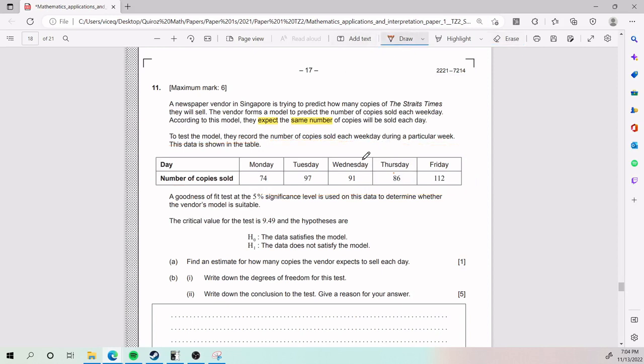They tell us that a goodness of fit test at the 5% significance level is used on this data to determine whether the vendor's model is suitable, that the critical value is given, and that H0 and H1 are given. So a couple of important things before we jump into the problem. First, they give us significance level and critical value, which we need to conclude for our tests. Second, H0 and H1 are in words and don't have to do with means, so we're straying away from the t-test. They tell us we're dealing with a goodness of fit test, which is chi-squared GOF on your calculator.